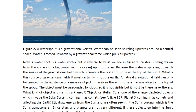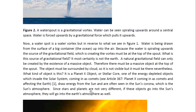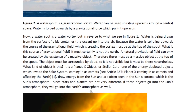A water spout is a water vortex, but in reverse to what we see in figure one. Water is being drawn from the surface of a big container, the ocean, up into the air. Because the water is spiraling upwards, the source of the gravitational field which is creating the vortex must be at the top of the spout. A natural gravitational field can only be created by a massive object. Therefore, there must be a massive object at the top of the spout, surrounded by cloud — not visible, but nevertheless present. It is a Planet X object, or stellar core, one of the energy-depleted objects which invade the solar system, coming in as comets.